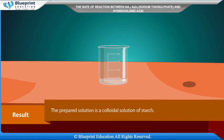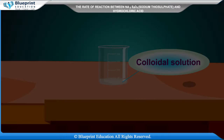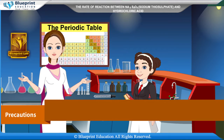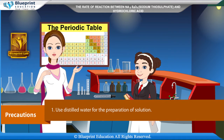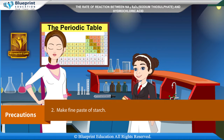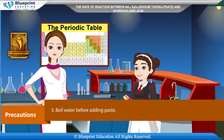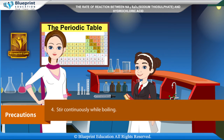Result: The prepared solution is a colloidal solution of starch. Precautions: Use distilled water for the preparation of the solution. Make a fine paste of starch. Boil the water before adding the paste. Stir continuously while boiling.